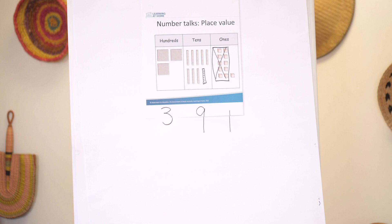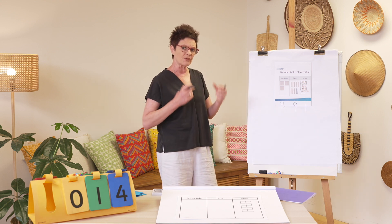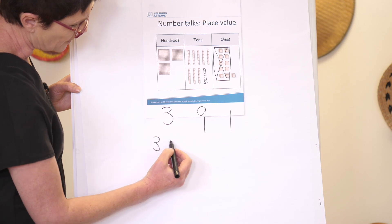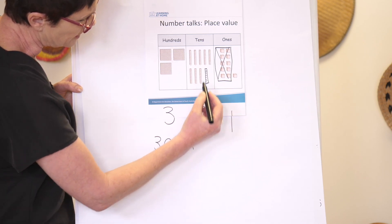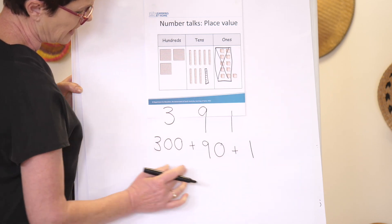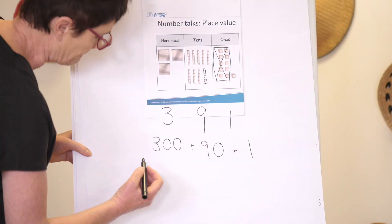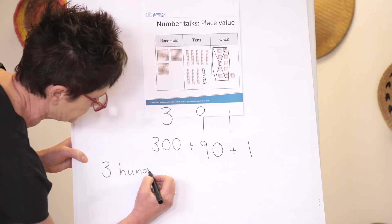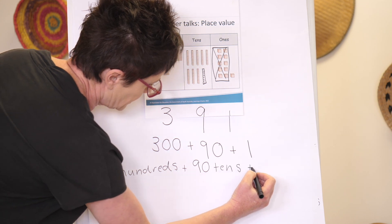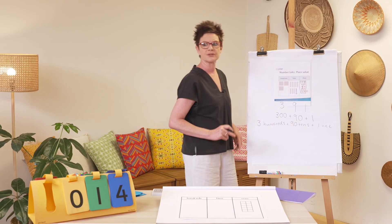Now we know that this is the number three hundred and ninety-one. How else can I represent this number? If I partition this number I'm going to write: three hundreds, nine tens — ninety — and one one. This is how I can write three hundred and ninety-one. Or I can write it in words: three hundreds, nine tens, and one one.